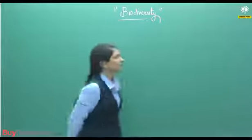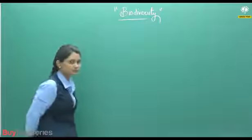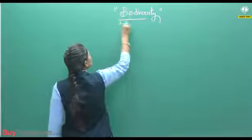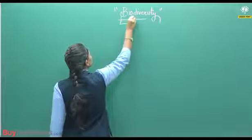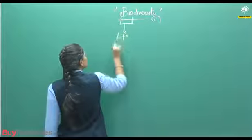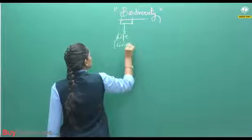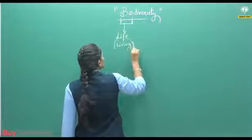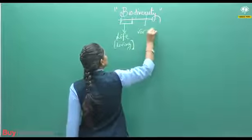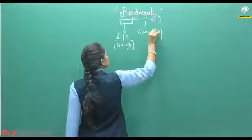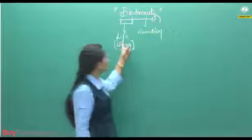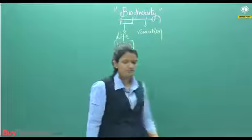The chapter is Biodiversity. First we will discuss the meaning of this topic. 'Bio' means life, or we can say living. 'Diversity' means variation. So, biodiversity means variation in life - that is called biodiversity.